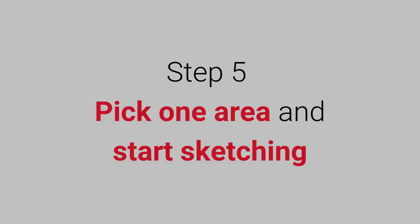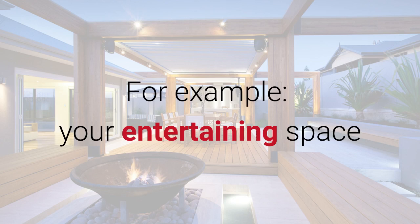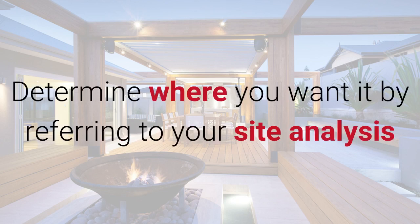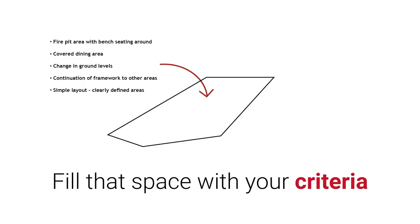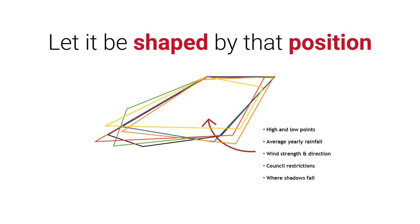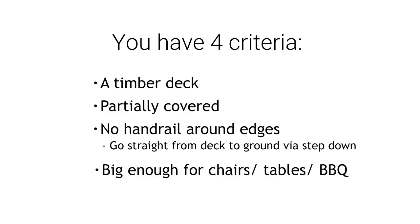Step 5: Pick one area and start sketching. Let's look at an example, such as your entertaining space or area. You determine where you want it by referring to your site analysis. You fill that space with your criteria and you let it be shaped by that position. You have four criteria for this area: a timber deck, something that's partially covered, no handrail around the edges, and the deck has to go straight from the deck to the ground or down a few steps if needed. It also needs to be big enough for a table, some chairs and perhaps a barbecue bench. So let's have a look at the site and see what positions we can rule out.